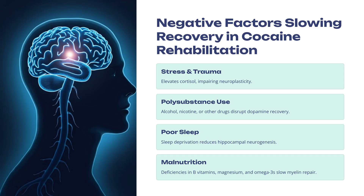Now the negative factors that can impede brain recovery: exposure to stress and trauma elevates cortisol, which impedes neuroplasticity; ongoing polysubstance use — continuing to use alcohol or nicotine even after becoming abstinent from cocaine — can disrupt dopamine recovery; poor sleep and sleep deprivation specifically reduces hippocampal neurogenesis; and malnutrition, particularly deficiencies in B vitamins, magnesium, and omega-3s, will impede brain and myelin repair.